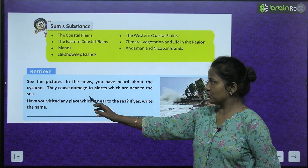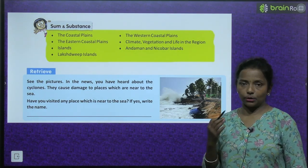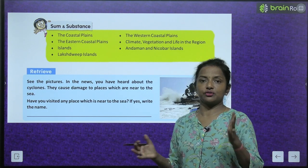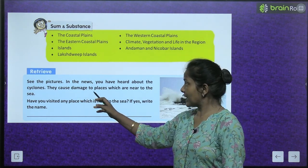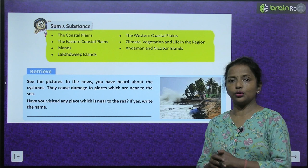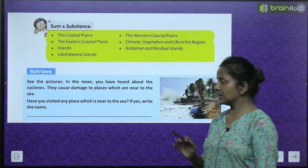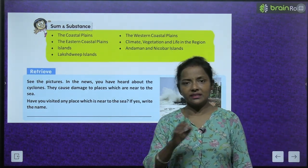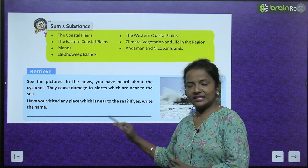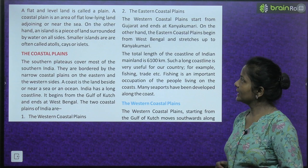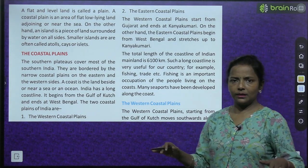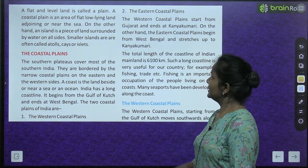Here is a picture — see the picture. In the news you have heard about cyclones — aapne cyclone ke baare mein suna hoga ki cyclone aya aur wahan pe itna sab kuch destroy ho gaya, sab damage ho gaya. They cause damage to places which are near to the sea. Have you visited any place near the sea? If yes, write the name. A plain means land which is flat and levelled.